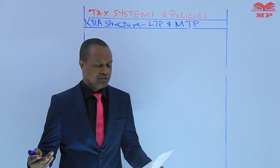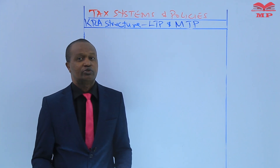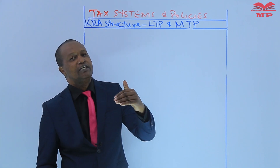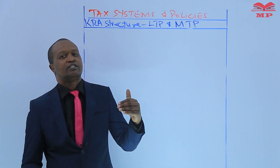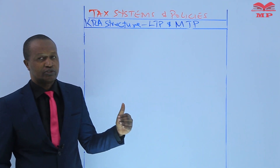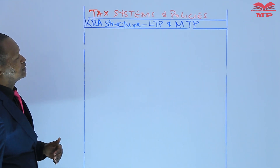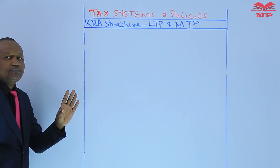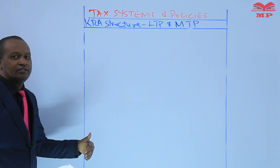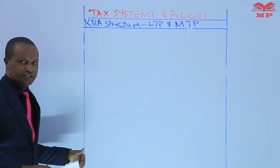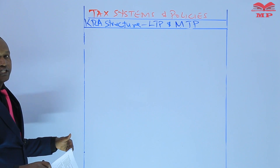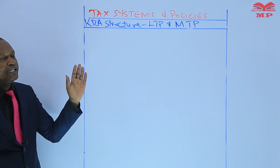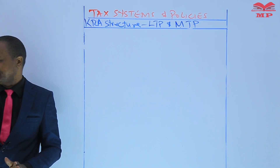There are two segments, and that's what we are going to study today. In studying the two segments we're going to look at the key functions of the Large Taxpayer Organization and also the Medium Taxpayer Organization. The Kenya Revenue Authority has a structure that categorizes and divides taxpayers into two main categories: the large taxpayers and the medium taxpayers.